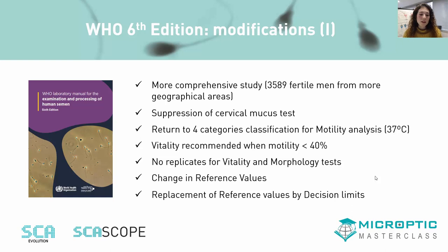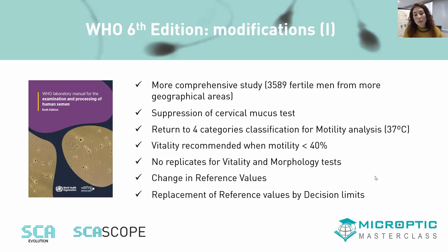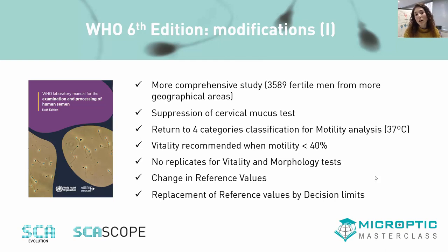Importantly, the four-category classification for motility analysis has been retrieved, and it is also recommended to perform the analysis at 37 degrees — we will discuss this later. Concerning vitality analysis, it is now recommended when total motility is under 40%, not just progressive motility. In addition, there is no need for replicates for vitality and morphology tests; counting at least 200 spermatozoa for each is now considered correct and representative.